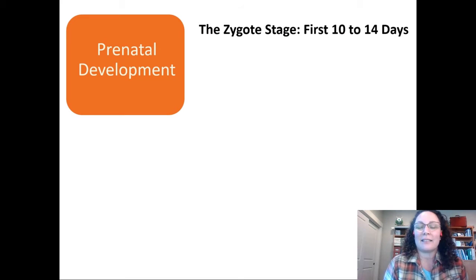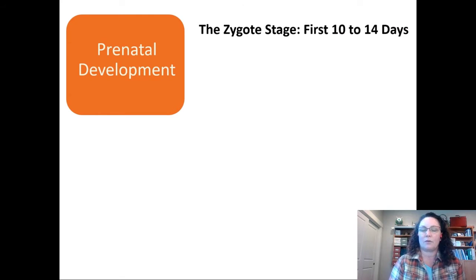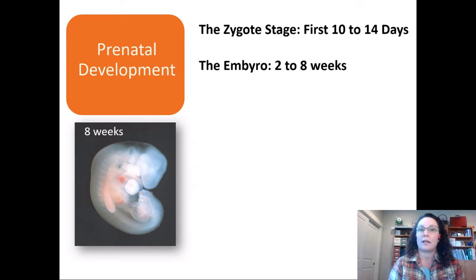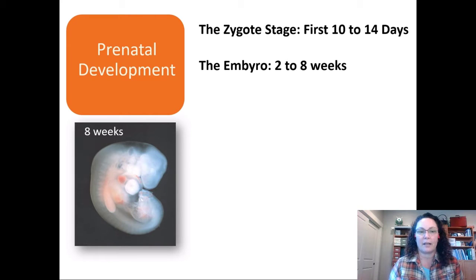Let's talk about prenatal development. The zygote stage comes after the blastocyst stage — it's about the first 10 to 14 days from conception until implantation in the uterus. Once implantation has occurred, it's called an embryo. Here we have an eight-week embryo, right at the end of the embryonic stage. One interesting thing about embryos is that if you lined this embryo up next to a tadpole, a chicken, or a golden retriever, you'd have a hard time telling the difference — they all have very similar structures during the embryonic stage.